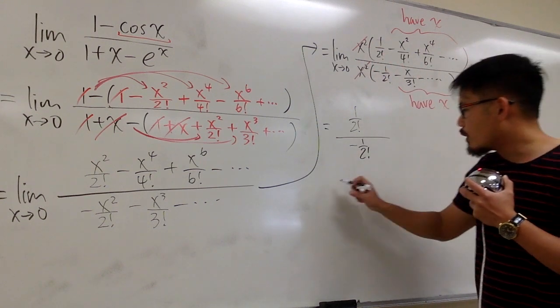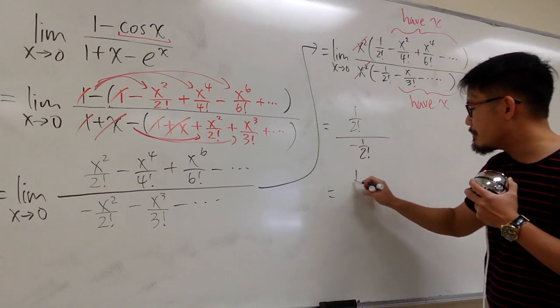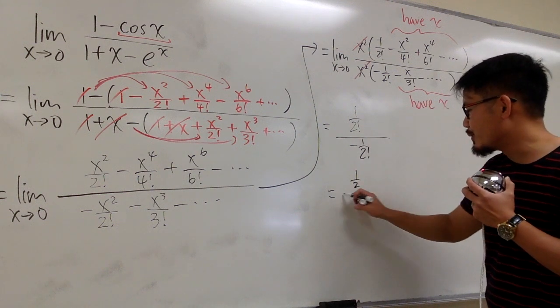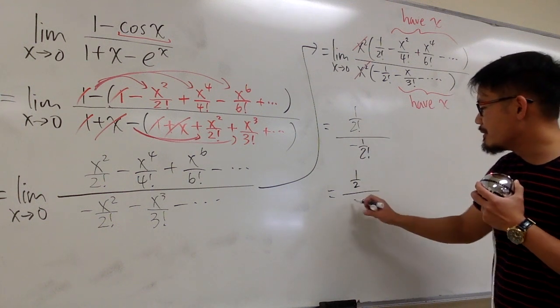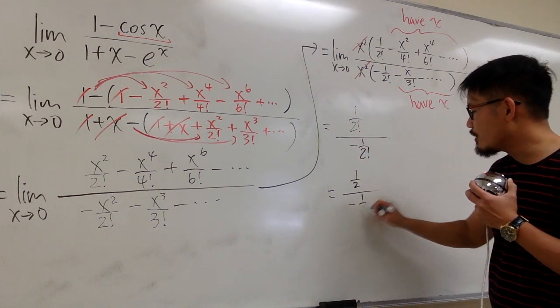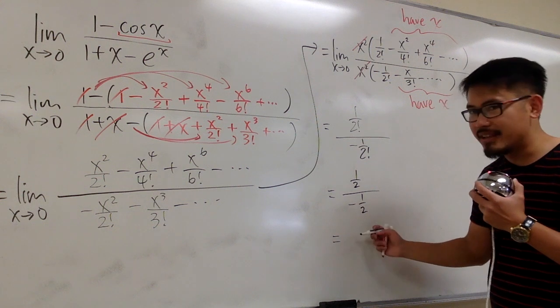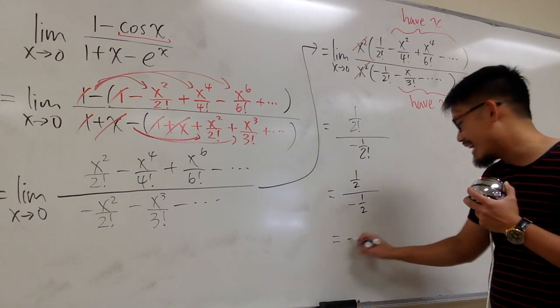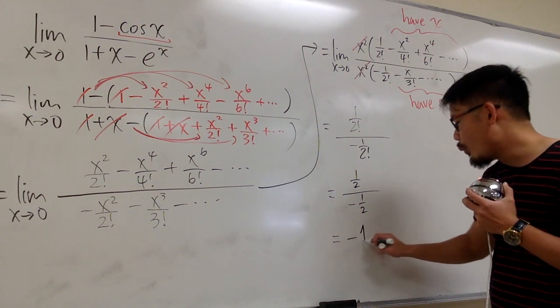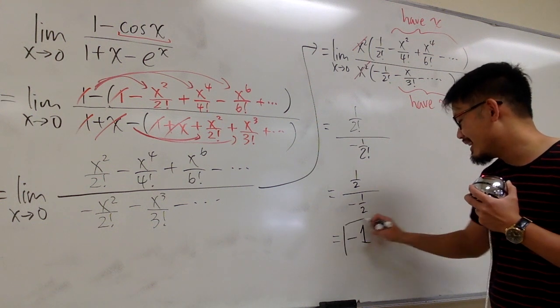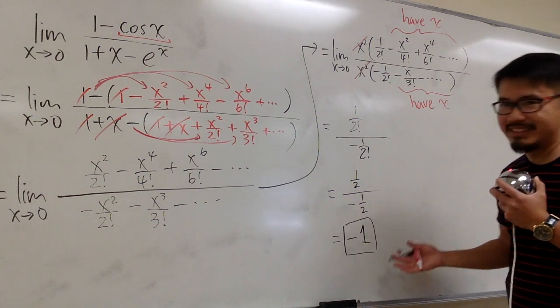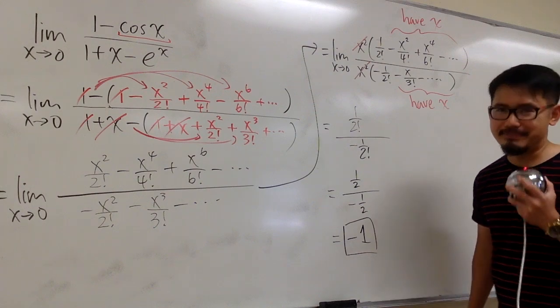On the top this is 1 over 2, and on the bottom this is negative 1 over 2. So at the end, the answer is negative 1. The x squared cancels, giving negative 1 over 2 divided by negative... that is, the final answer is negative 1.